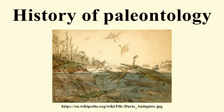Shen Kuo of the Song Dynasty used marine fossils found in the Taihang Mountains to infer the existence of geological processes such as geomorphology and the shifting of seashores over time. Using his observation of preserved petrified bamboos found underground in the Yanhe Bay region of Shaanxi province, he argued for a theory of gradual climate change, since Shaanxi was part of a dry climate zone that did not support a habitat for the growth of bamboos.